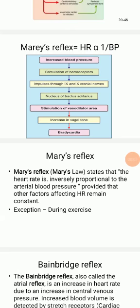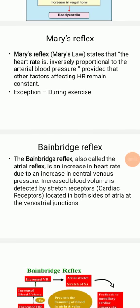Now we will see the second reflex — Bainbridge reflex, also called the atrial reflex. It is an increase in the heart rate due to increase in the central venous pressure. When central venous pressure increases due to increase in blood volume, venous return also increases. This is detected by stretch receptors present in both sides of the atria at the junction of the veins and the atria.